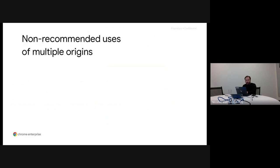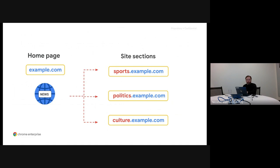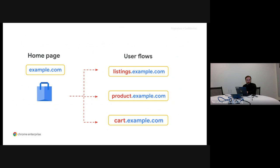Let's look at some examples of non-recommended uses of multiple origins. A common one is arbitrarily separating different site sections into multiple origins that should be part of a unified experience. For example, a news site where each subsection — like sports, politics, and culture — belongs to its own subdomain. Another frequent case we've seen many times: an e-commerce web application that has a home page at example.com, and the listings, product, and cart pages are in different subdomains.